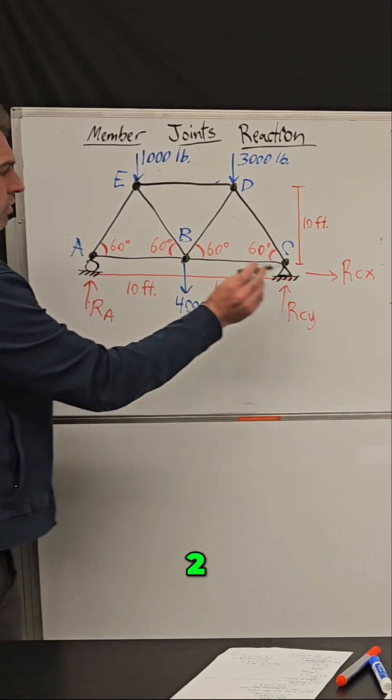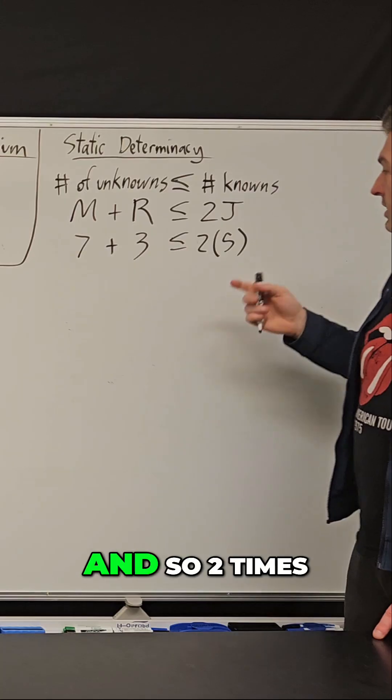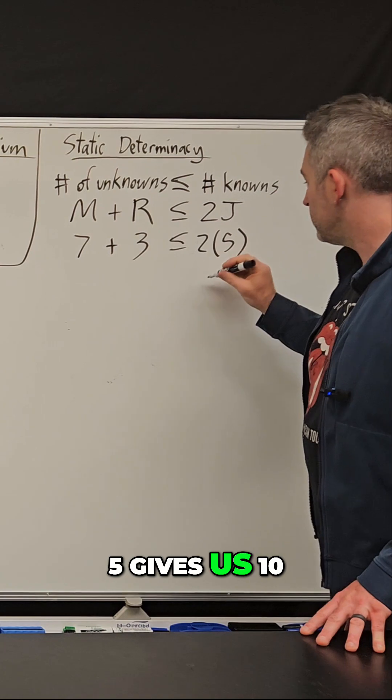we have one, two, three, four, five joints. And so two times five gives us ten.